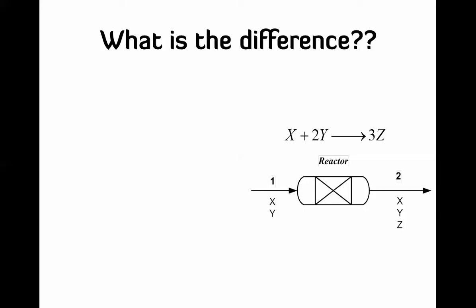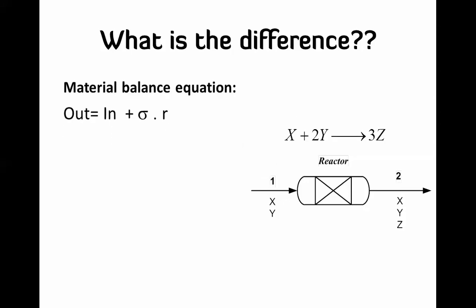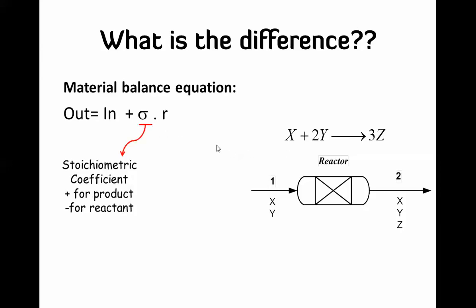The material balance equation is going to be almost the same, but with one extra term to take into account the reaction that changes the compositions of the products and the reactants. You have: out = in + σ·r, where σ is the stoichiometric coefficient — the number before each component in the balanced equation. It is negative for the reactants and positive for the products.